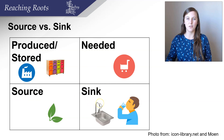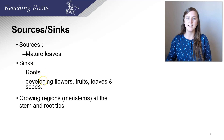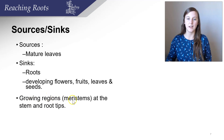Think of it as where the plant is using these sugars for growth. Some examples of sources are mature leaves that are photosynthesizing. Examples of sinks are roots, since roots do not photosynthesize, developing flowers, fruits, leaves, and seeds that need these sugars and carbohydrates to continue their growth, and the growing regions called the meristems at the stems and root tips.